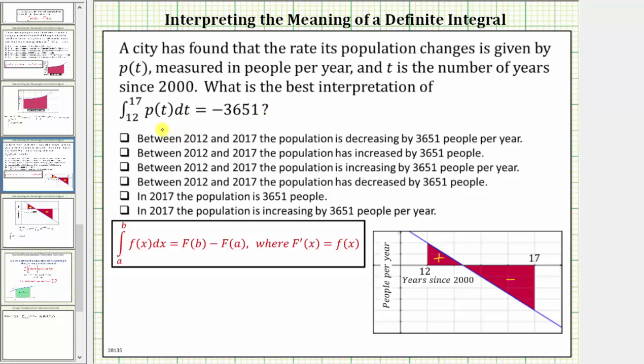We will interpret the meaning of this definite integral looking at this in terms of signed area as well as the fundamental theorem of calculus. But before we do this, it's important to recognize that because little p of t gives the rate at which the population is changing, little p of t is the derivative of the population function.